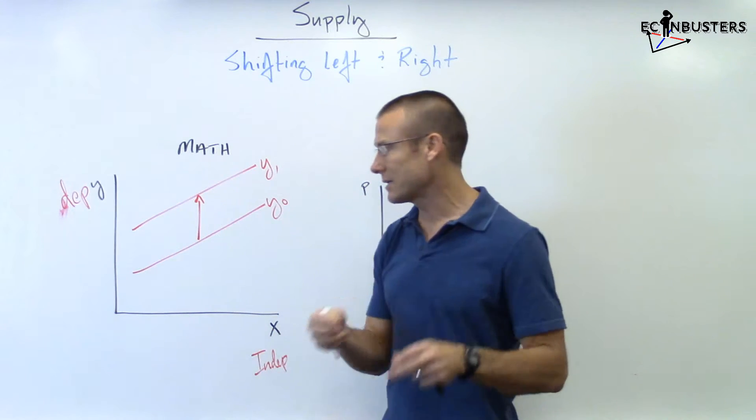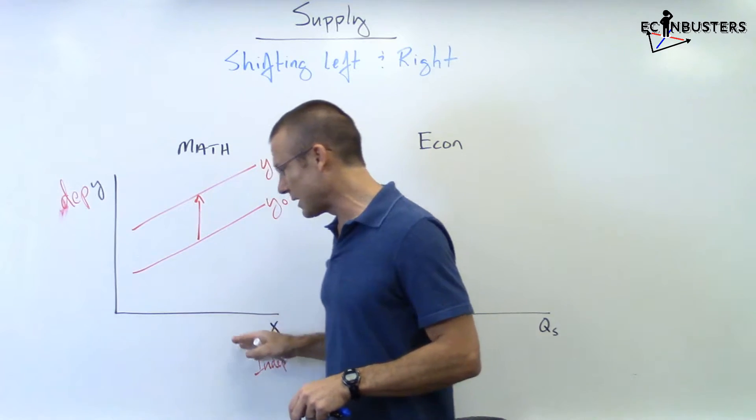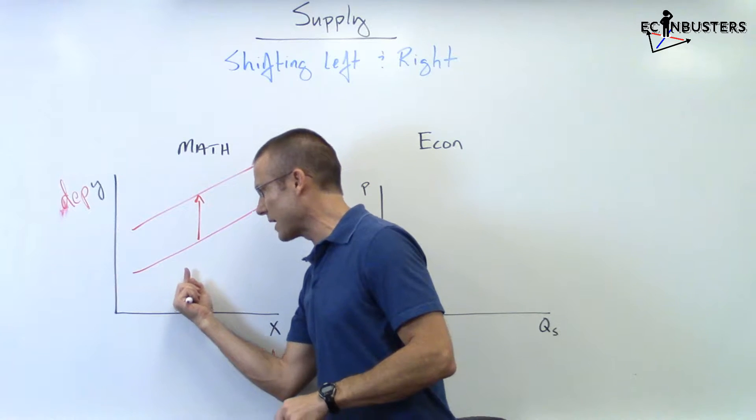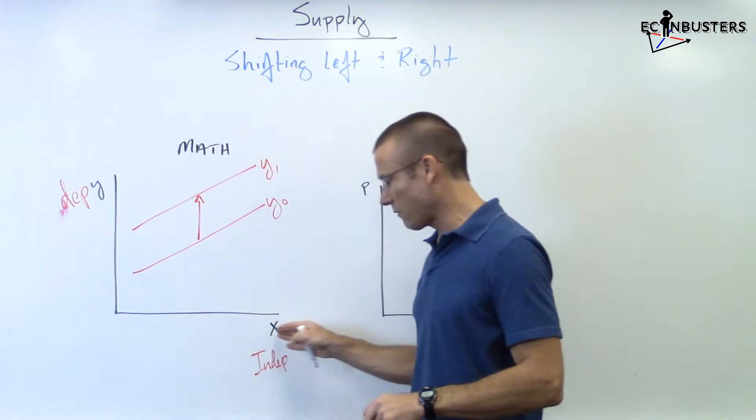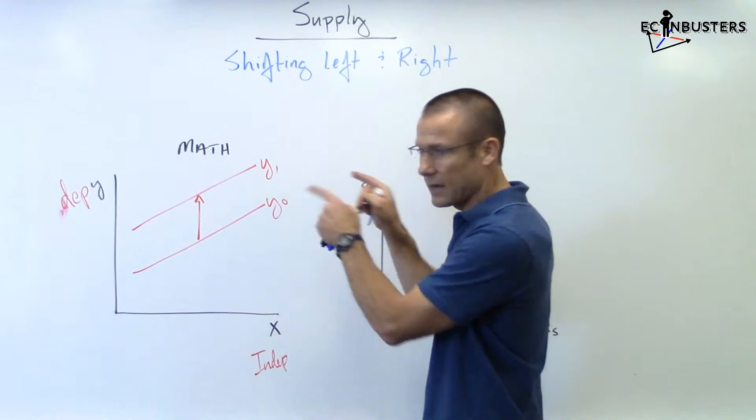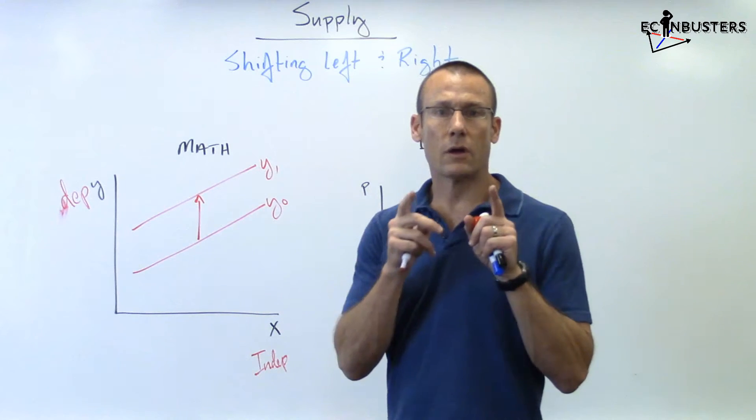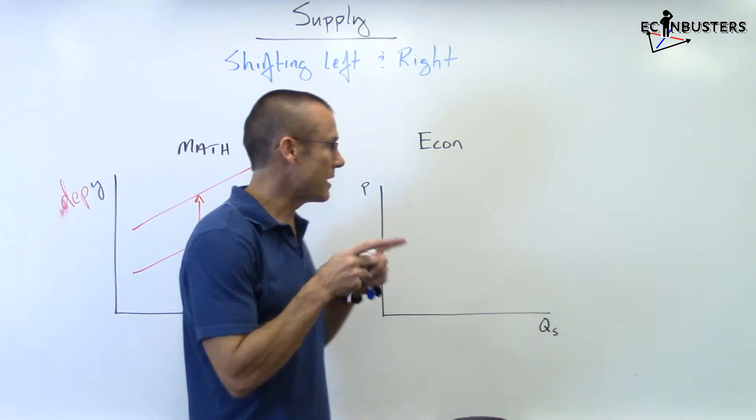Let me say that again because here's the key: y is dependent on x, and what we're saying in this thing is the dependent variable has increased at all values of x. So when you look at that in math class, you say hey, that thing shifted up - y got bigger. And that is exactly right. But now we go to econ. In econ we got price on the vertical - that's the independent variable. We got quantity supplied over here on horizontal - that's